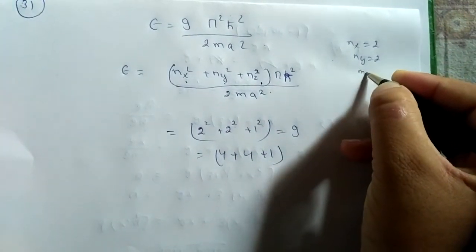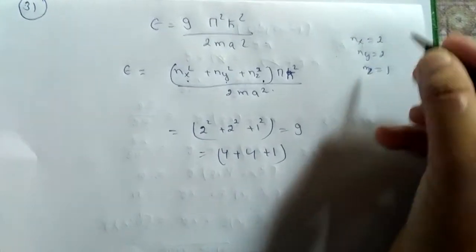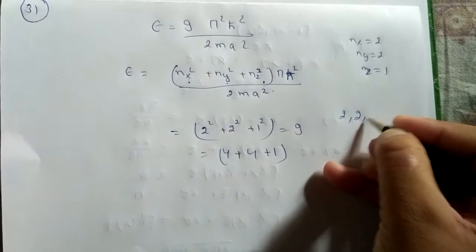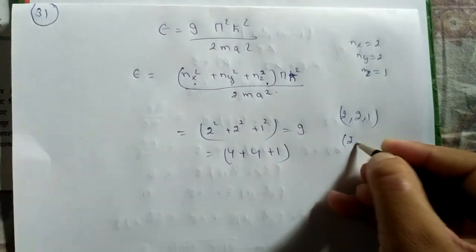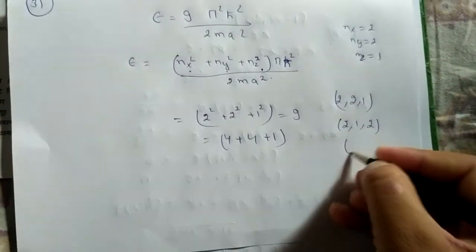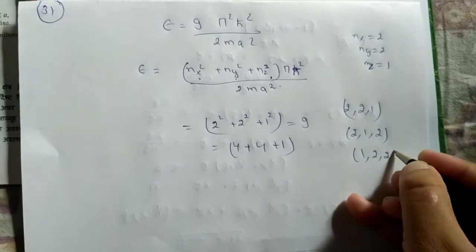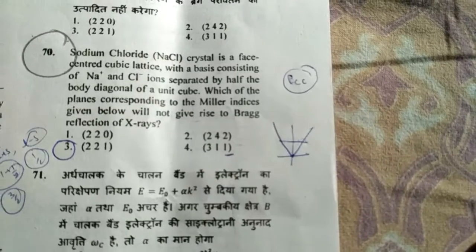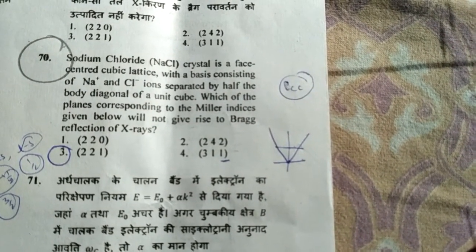We have this condition for 2, 2, 1 which is possible, also 2, 1, 2 and 1, 2, 2. So the degeneracy will be 3. Therefore, 3 eigen states are possible. For the second question about sodium chloride crystal: